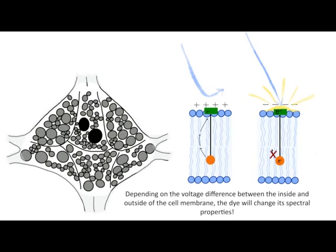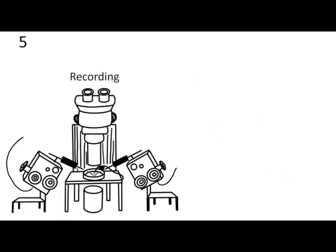So shortly, depending on the voltage difference between the inside and the outside of the cell membrane, the dye will change its spectral properties and we get our results.